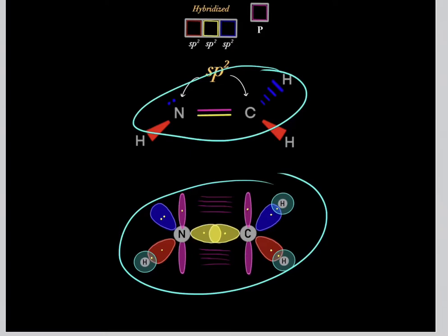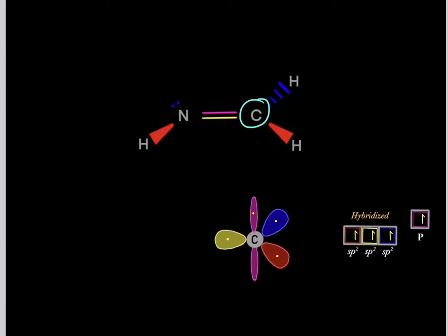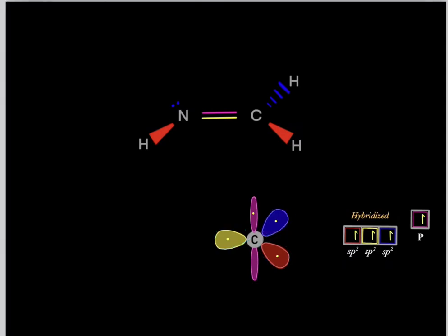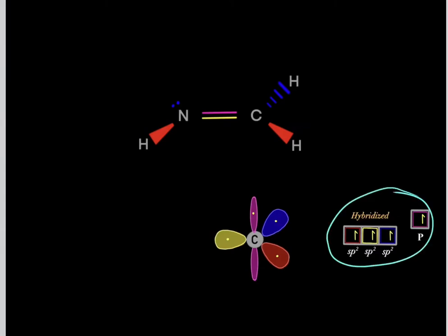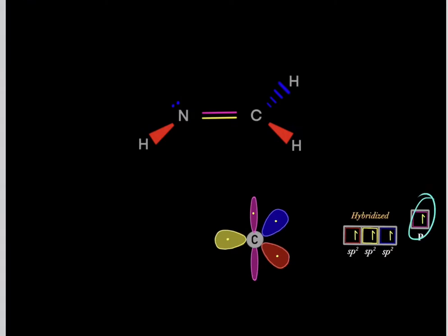Here's what this molecule looks like when you draw out the electron orbitals. The carbon is sp2-hybridized, meaning it has three sp2-hybridized orbitals and one unhybridized p-orbital. Carbon has four valence electrons, so we split four electrons among these orbitals — each orbital gets one electron. Each sp2 orbital and the p-orbital each contain one electron.